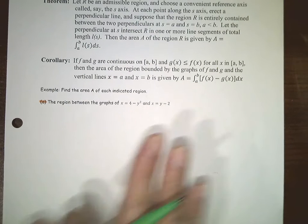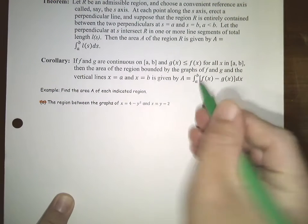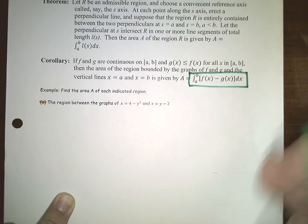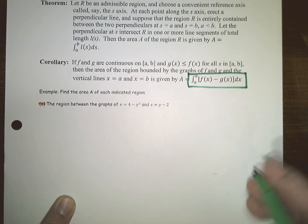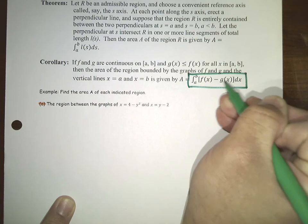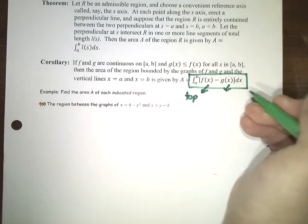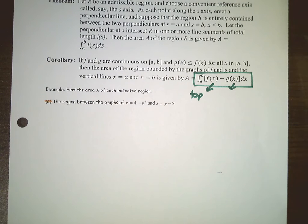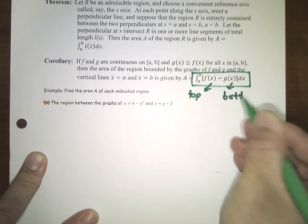So here is the theorem: the area bounded between two curves is the integral from a to b of f(x) minus g(x) dx. This is going to be the curve on the top, and this will be the curve on the bottom. Try to remember that this is the top minus the bottom.